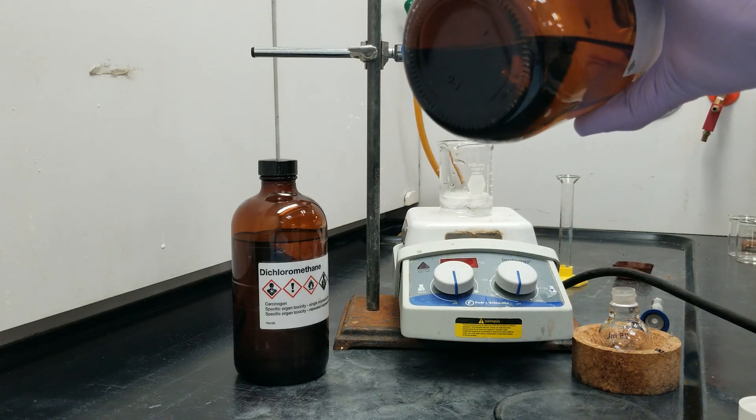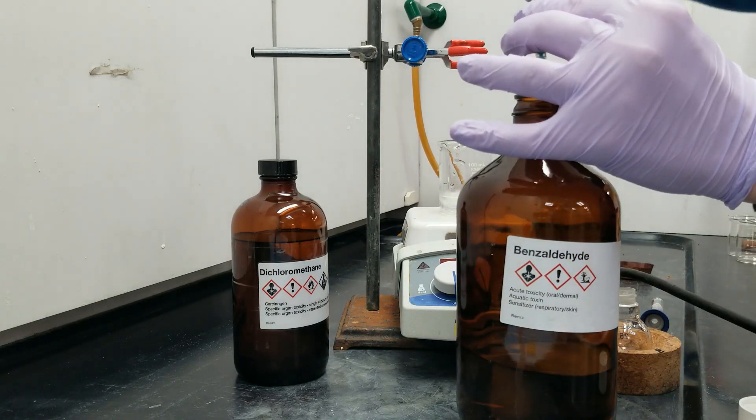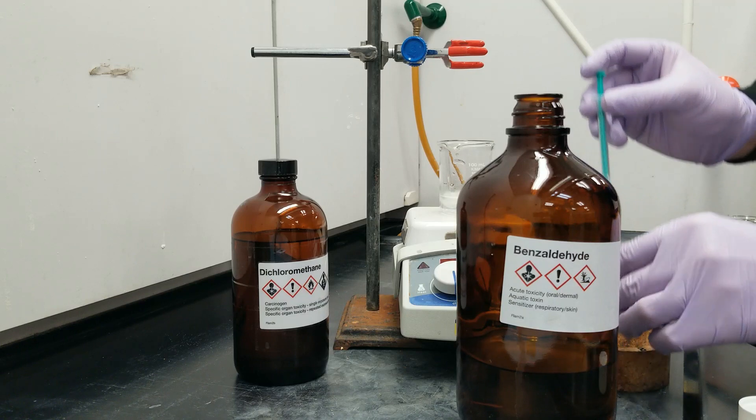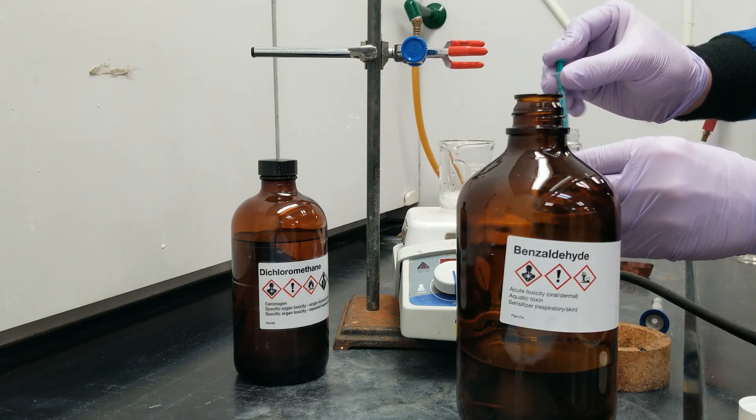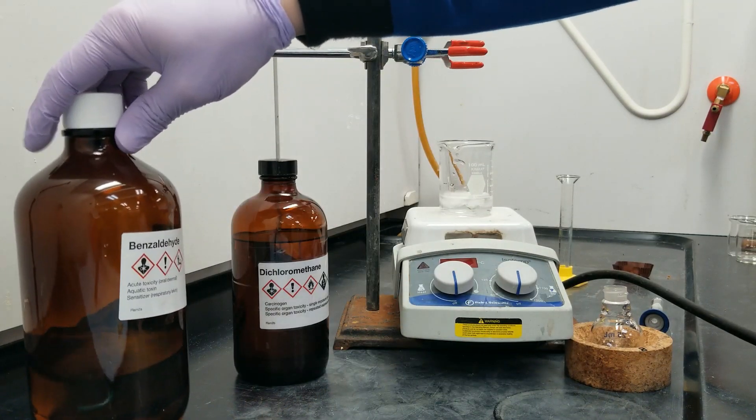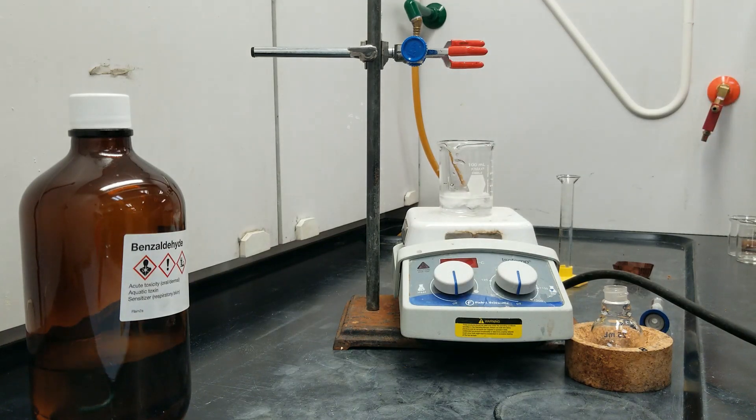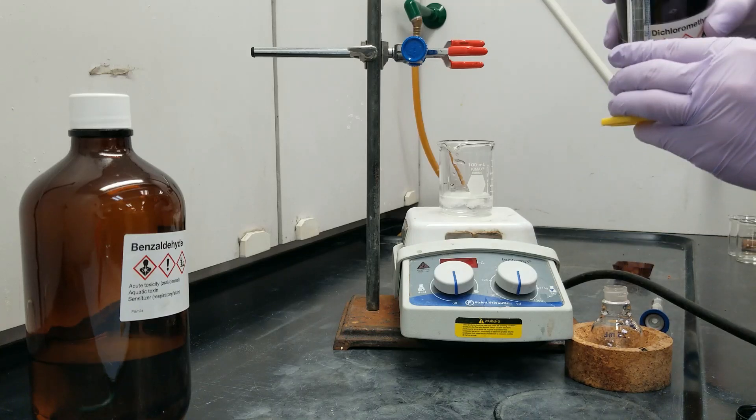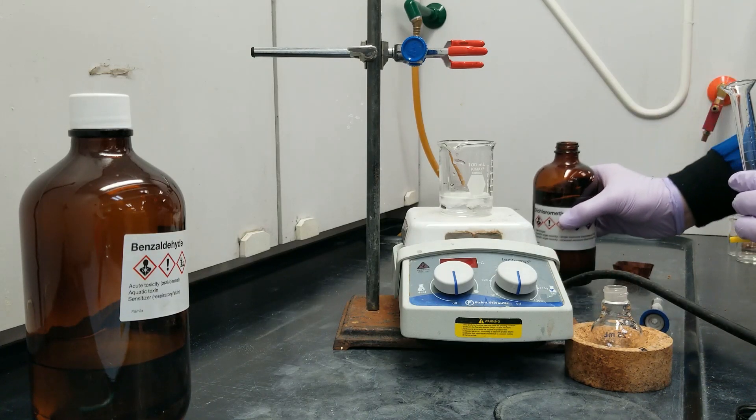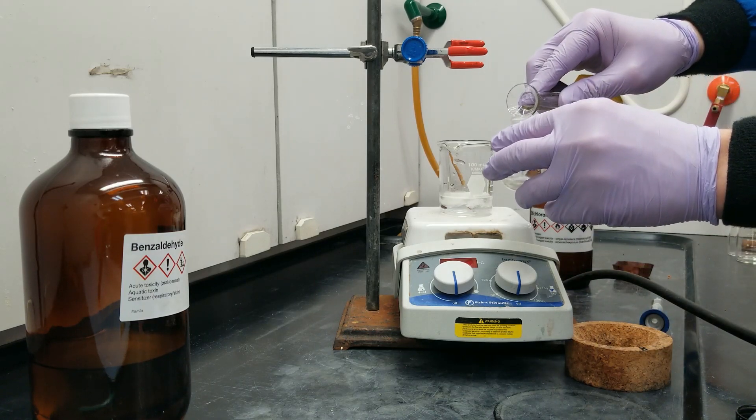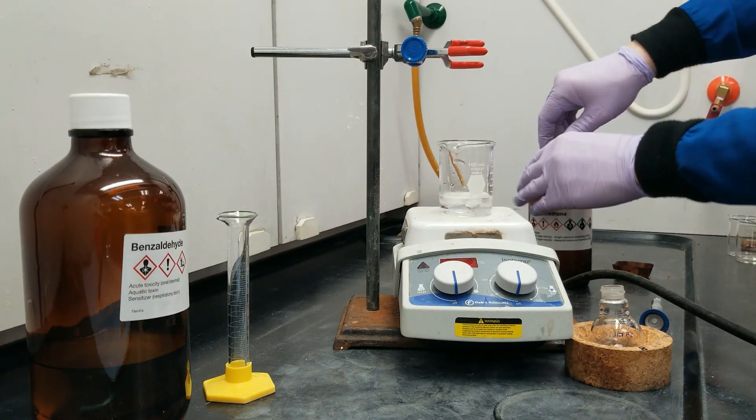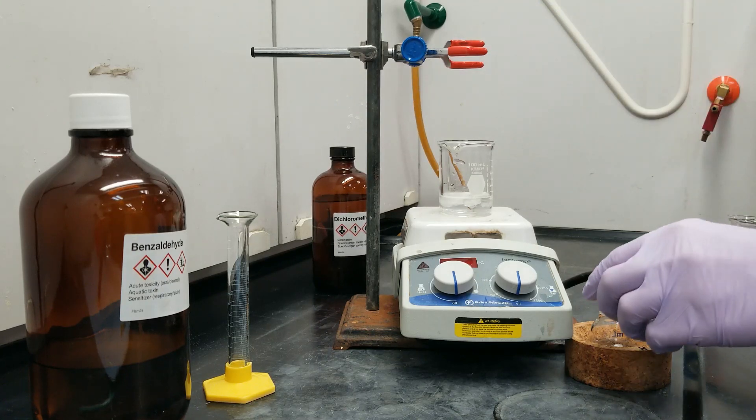Benzaldehyde, being an aldehyde, has a slightly positively charged carbon. And I'm going to use 5 milliliters of dichloromethane as the solvent in today's reaction. We're just going to homogenize this and get the benzaldehyde evenly mixed into the DCM by stirring.